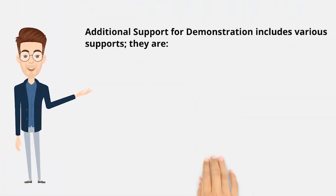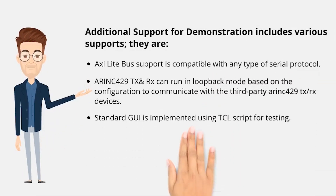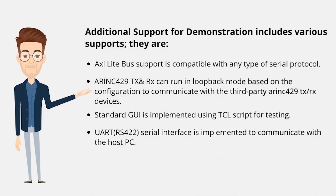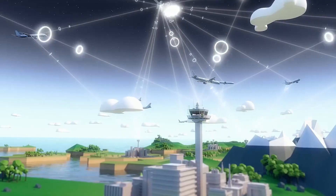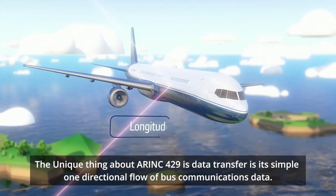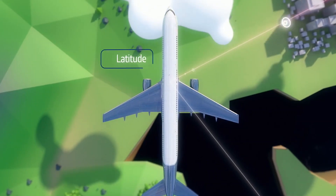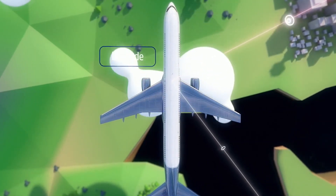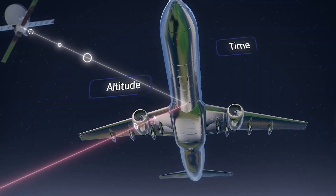Additional support for demonstration includes various supports per the ERINC specification. The unique thing about ERINC-429 data transfer is its simple one-directional flow of bus communications data. The primary purpose of the 429 standard is to support robust data transfer within the local area networks of advanced aircraft.